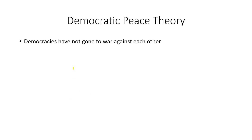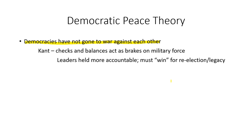Democratic peace theory emerged in the 1990s when political scientists went back and examined all democracies, going back to the United States' Constitution as the first modern democracy. They discovered that democracies have not gone to war with each other — a very interesting finding that still holds up. This was also predicted by Kant at the end of the Enlightenment, who looked at the checks and balances formed in representative systems, arguing these act as brakes on military force and that leaders in a democratic system are held more accountable.